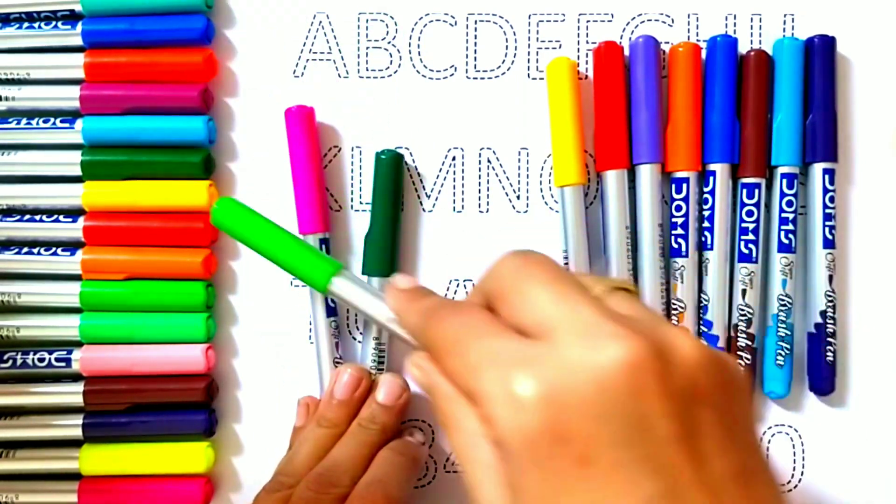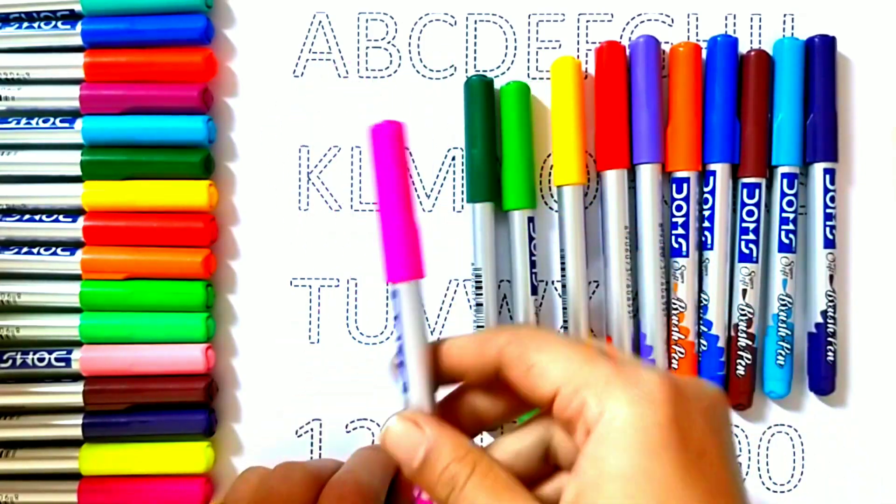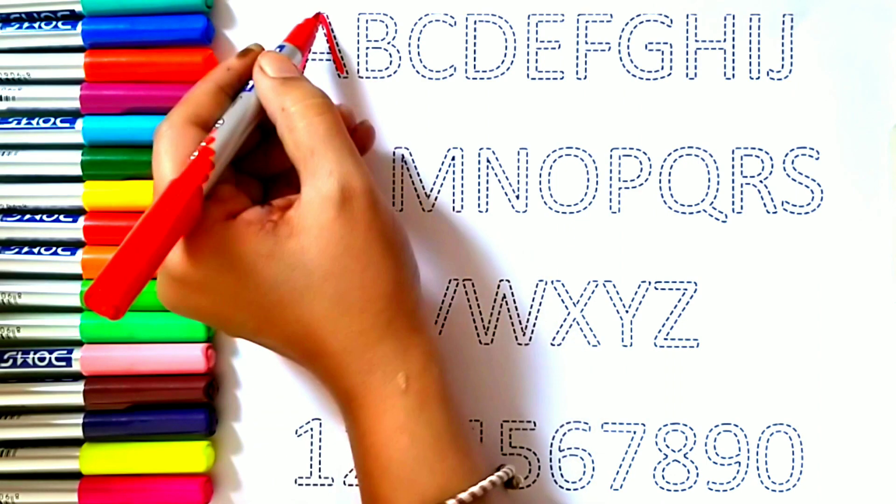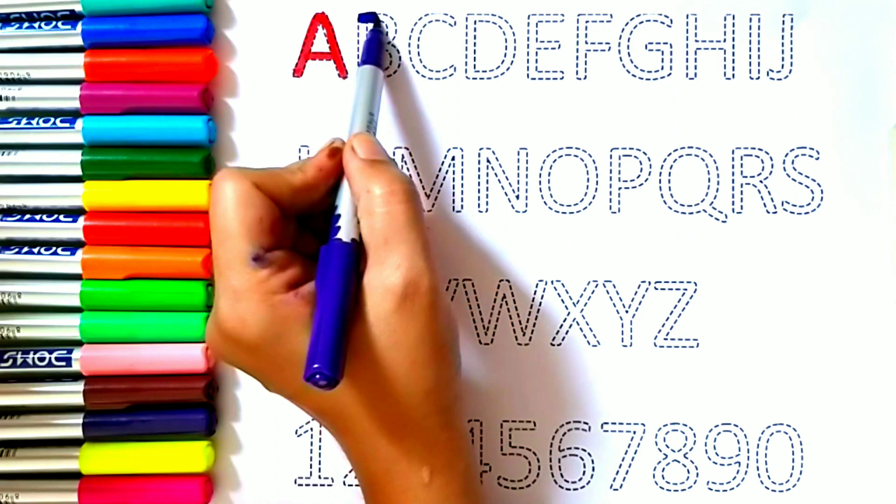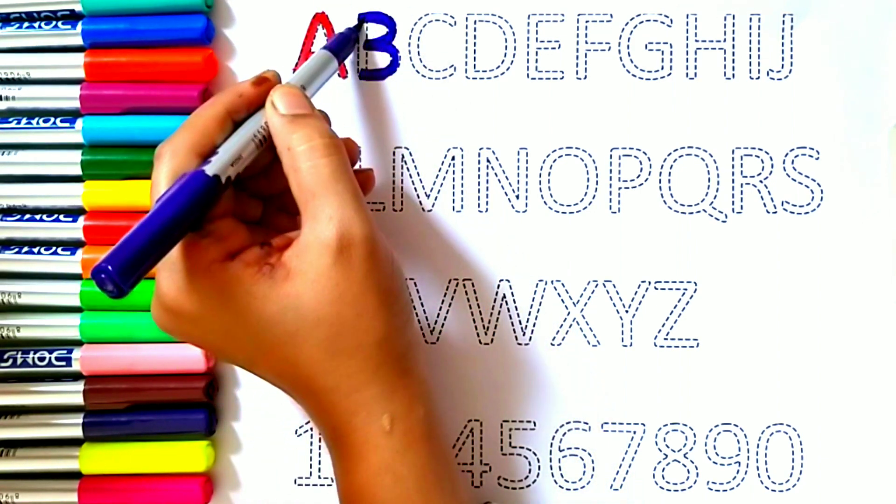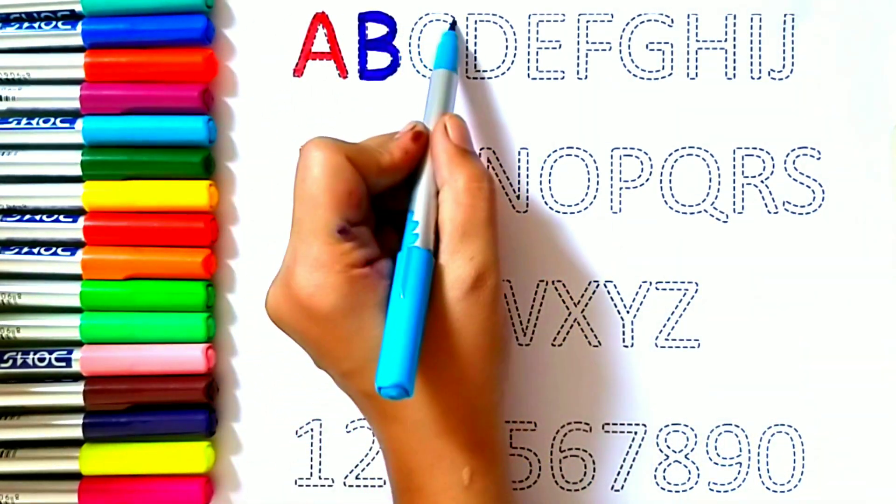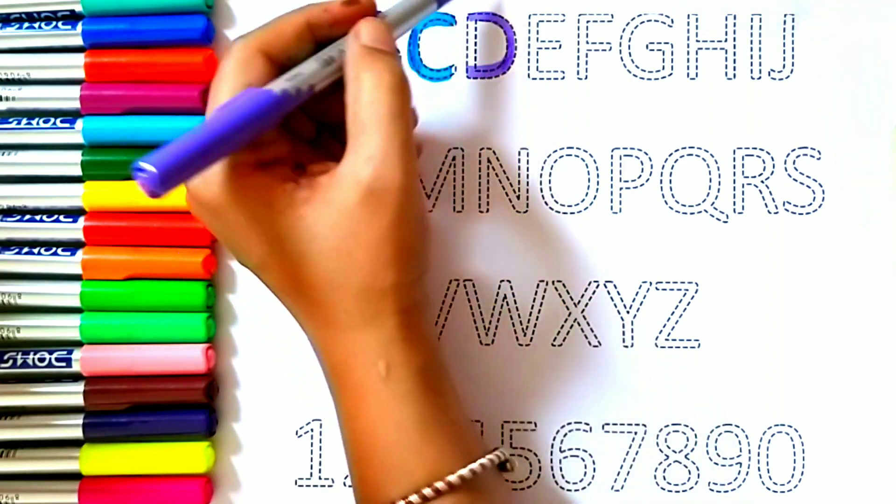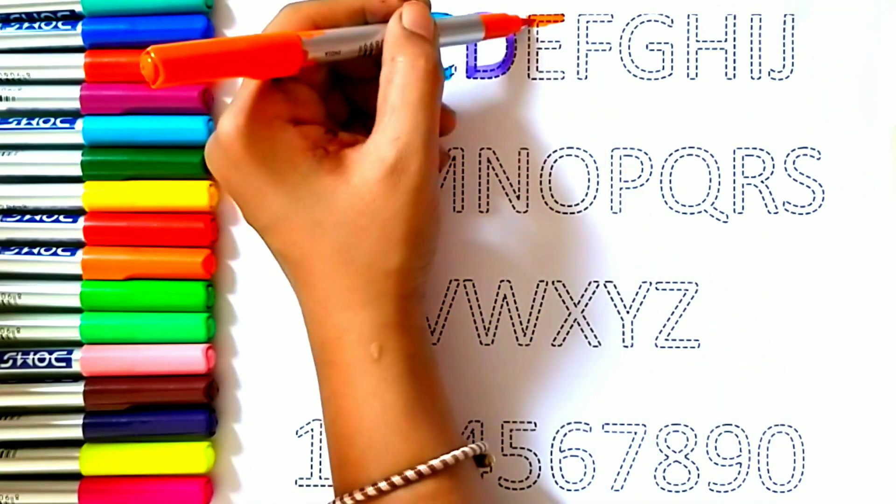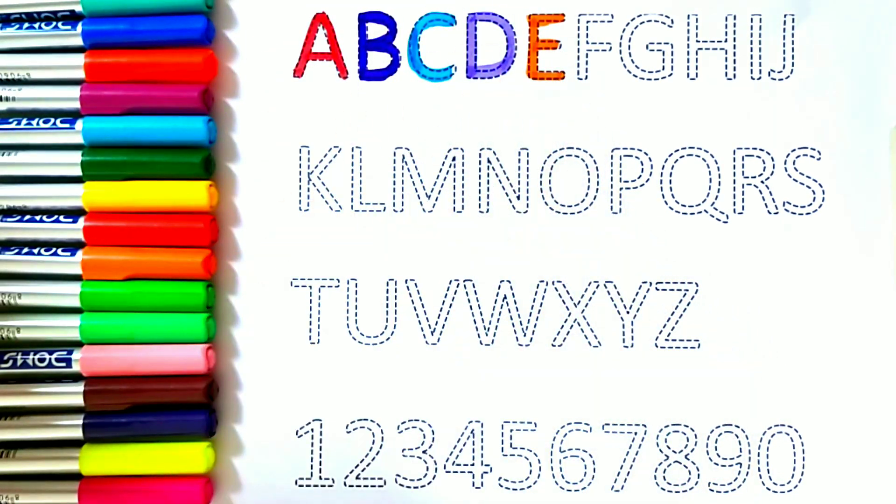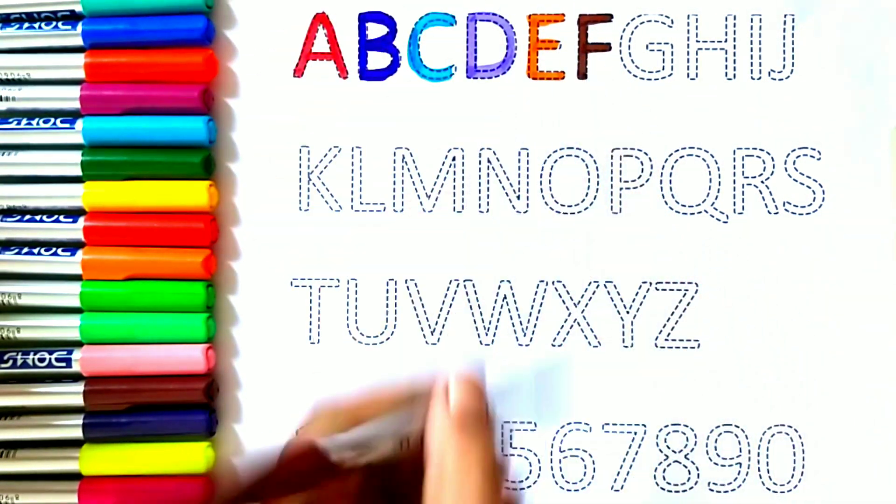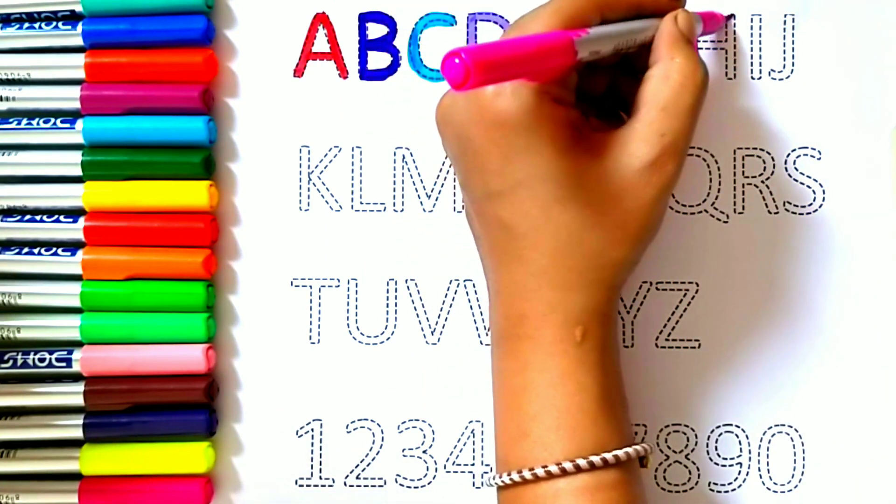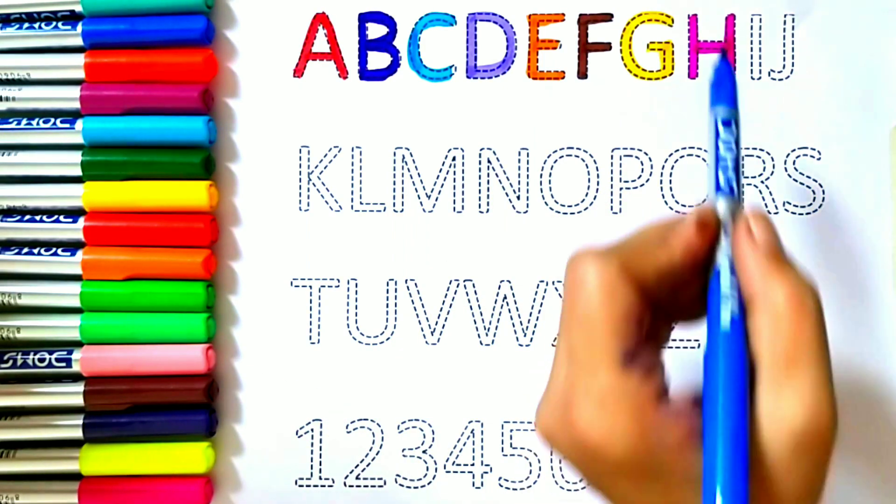A for apple, B for ball, C for cat, D for dog, E for elephant, F for fish, G for grapes, H for horse.